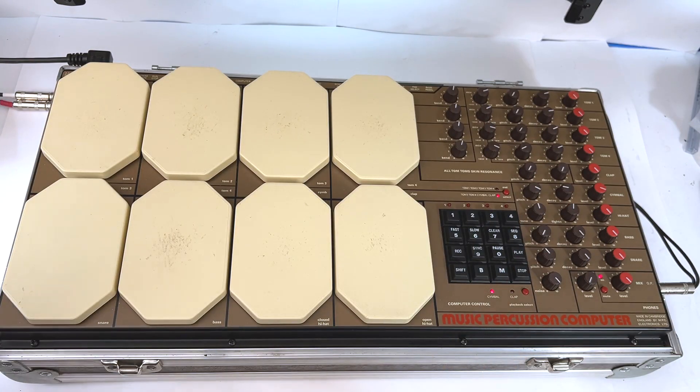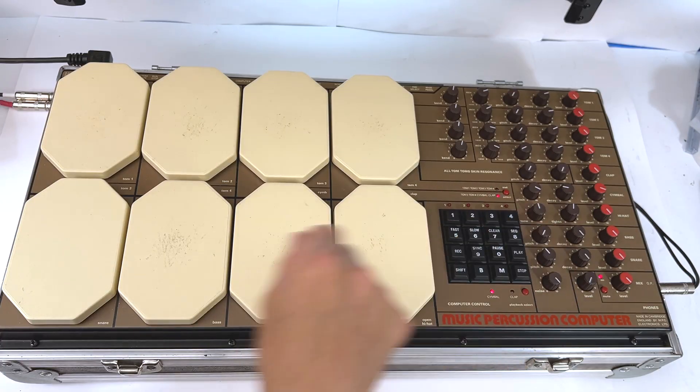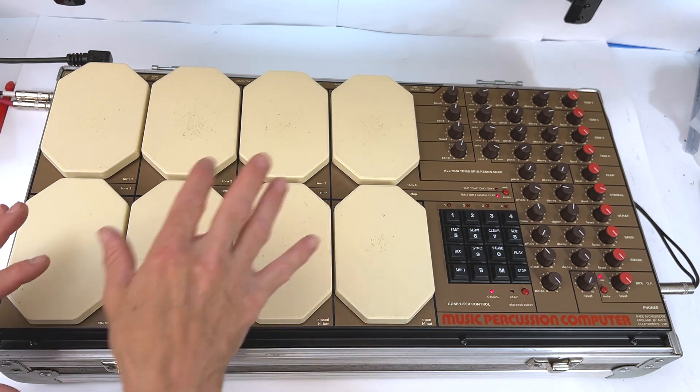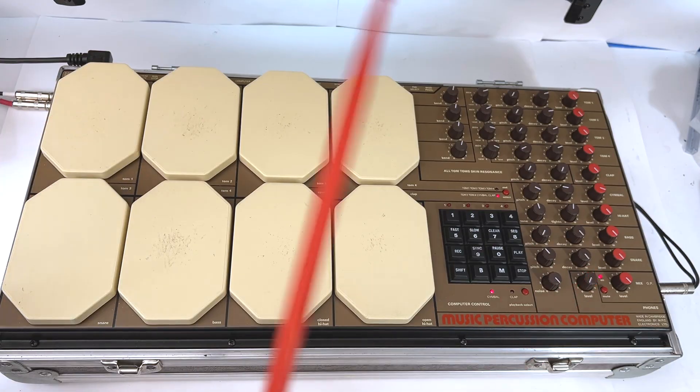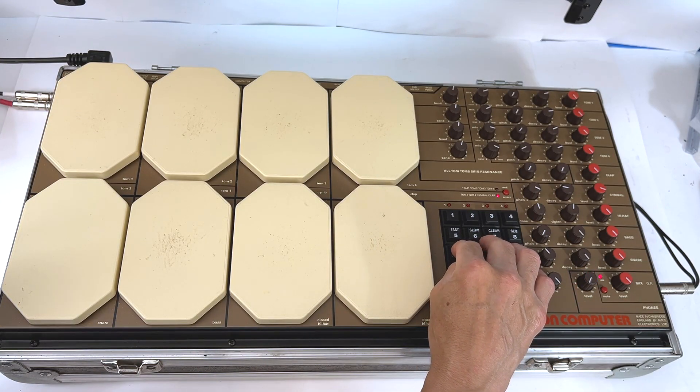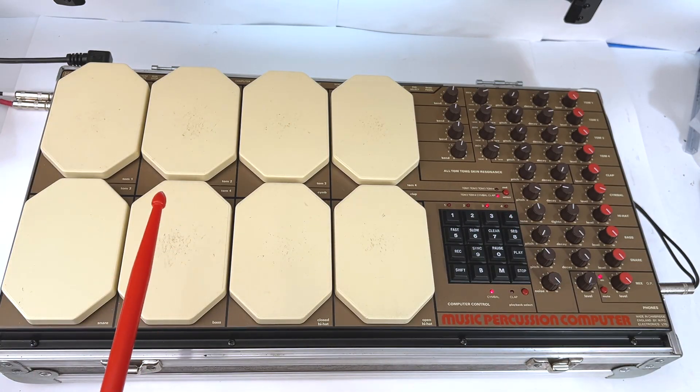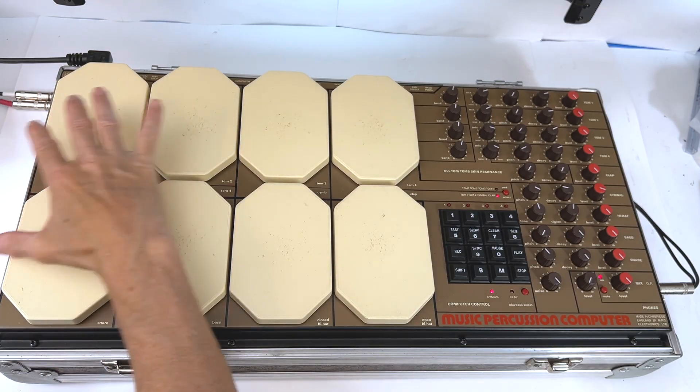And you have the ability to sequence into the unit itself. It only holds four patterns, so you can record four patterns, and then you can sequence those patterns into, let's call it a song when you're done. But it's very basic. So to get a little bit technical, when you play a pad, like I said, your trigger goes straight to the analog voice. But when you're in record mode, your trigger is also captured on the data bus and recorded into memory.